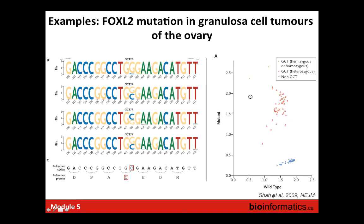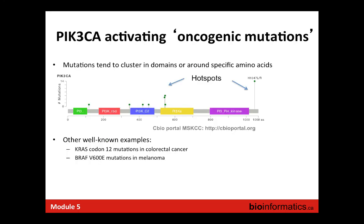Another example from Sohrab Shah's lab: studying a rare form of ovarian cancer using RNA sequencing, they noticed a recurrent mutation in the FOXL2 gene present in essentially every case. When validated in an additional cohort, every patient had this mutation—a pathognomonic event that defines the etiology of the disease, like BCR-ABL for CML. This type of mutation can provide high-accuracy molecular diagnostics for rare, hard-to-diagnose cancers.